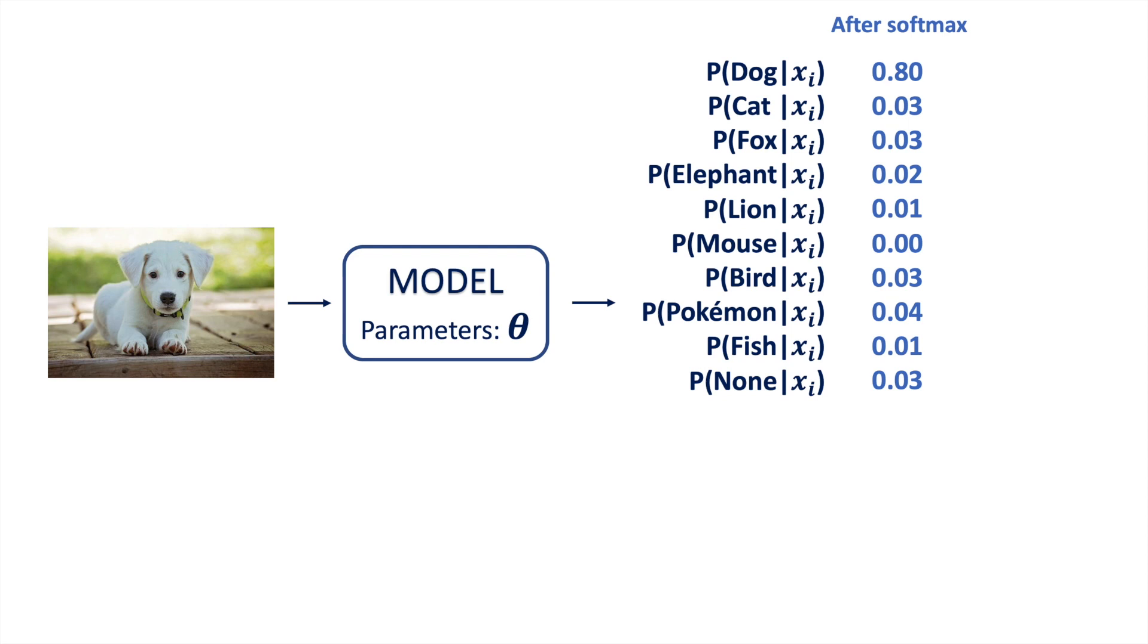The second detail is that although the cross entropy loss uses target distributions, most labeled datasets only have a single label for each input and won't give the entire underlying distribution. These labels can still be converted into PMFs by assuming that they represent a hard distribution where the probability of the true class is 1 and the probabilities of all other classes is 0.